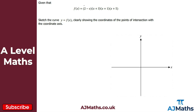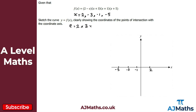Moving on to the third question. The function f(x) is already in fully factorized form, so we can identify the solutions directly: x = positive 2, negative 3, negative 1, and negative 5. Let's note those down: minus 5, minus 3, minus 1, and positive 2. We also need e — where it cuts the y-axis — which we get from 2 × 3 × 1 × 5 = 30. So it cuts the y-axis at 30.